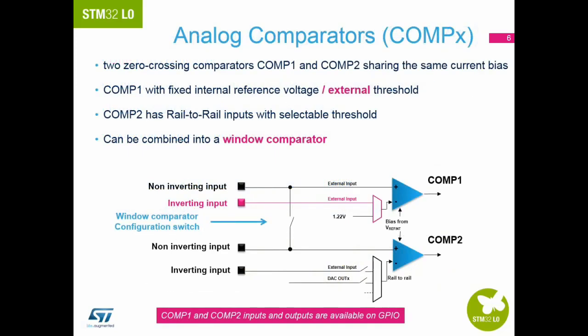There are two zero crossing analog comparators available on the STM32 L0. Comparator 1 can have a fixed internal voltage reference connected. Comparator 2 has rail-to-rail inputs. Both comparators can have all inputs and outputs connected to GPIO pins to make them as flexible as possible. Comparators can also be used to exit the device from low power modes if the internal voltage reference remains switched on.